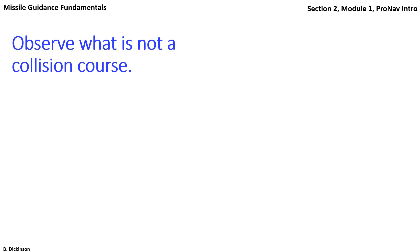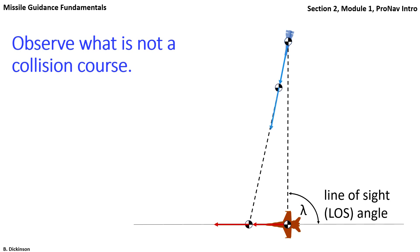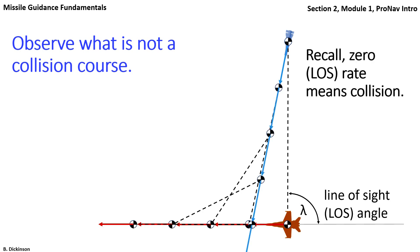Here's a target with a given heading and a pursuer with a given lead angle. Assume these bodies do not maneuver. Will they collide? Well, it seems obvious they won't, but let's set them in motion. Note the rotation of the line of sight direction and therefore the non-zero line of sight rate. And recall from Section 1 that a collision triangle is obtained when the line of sight angle lambda is constant in time. Now obviously this isn't happening here. So what should the pursuer do with its velocity vector?